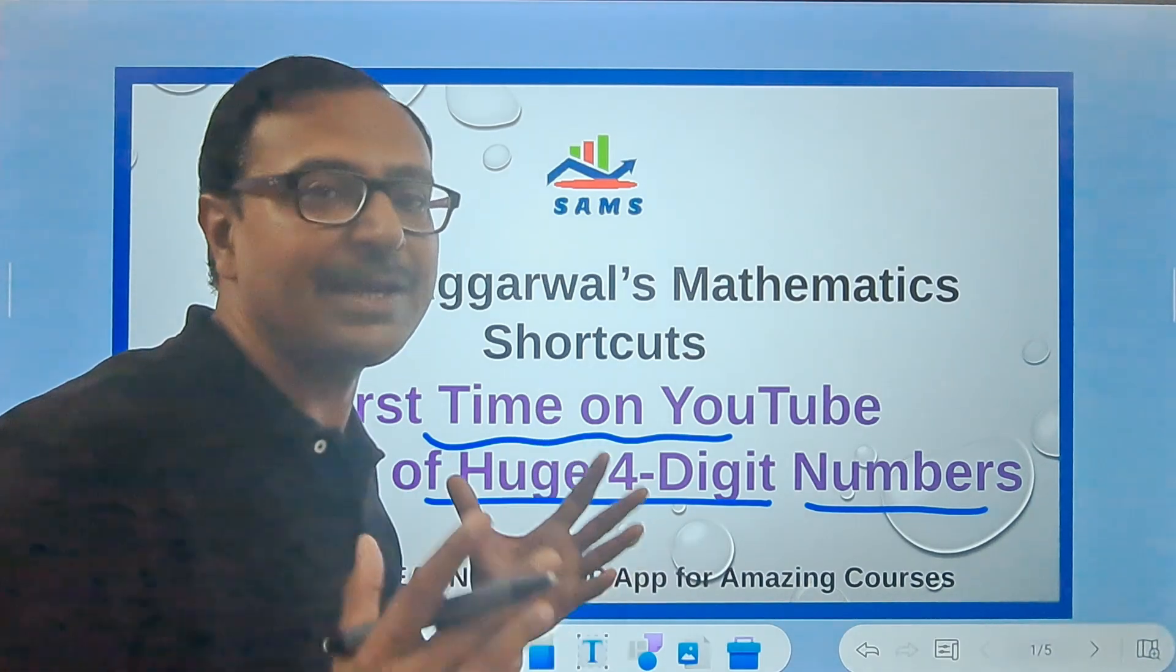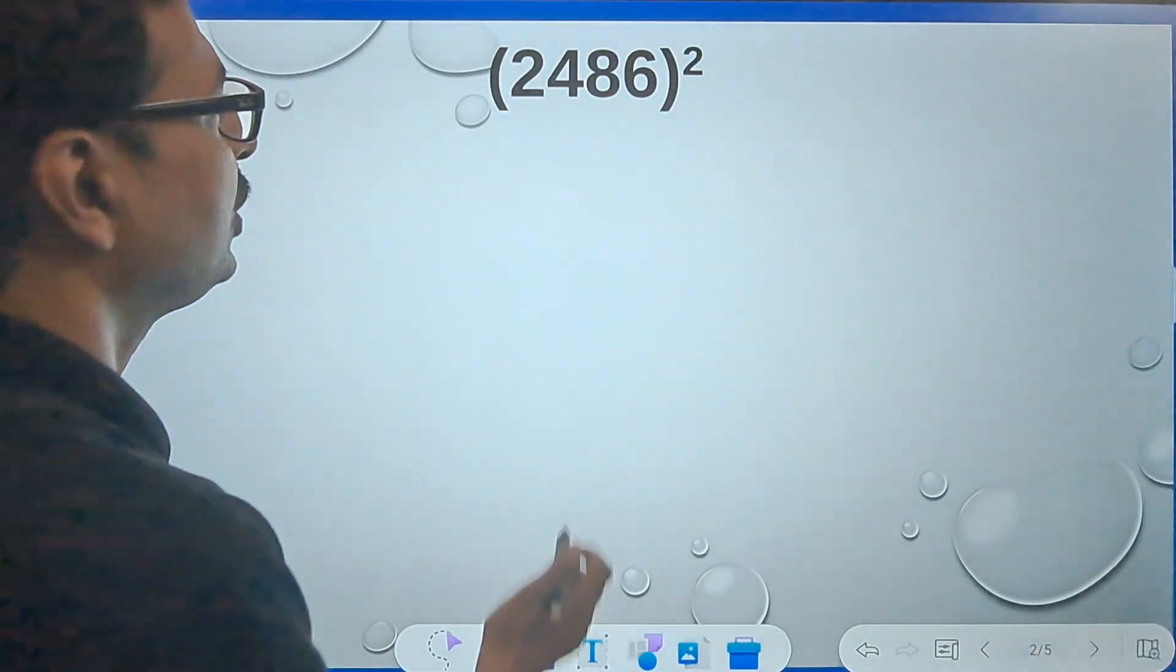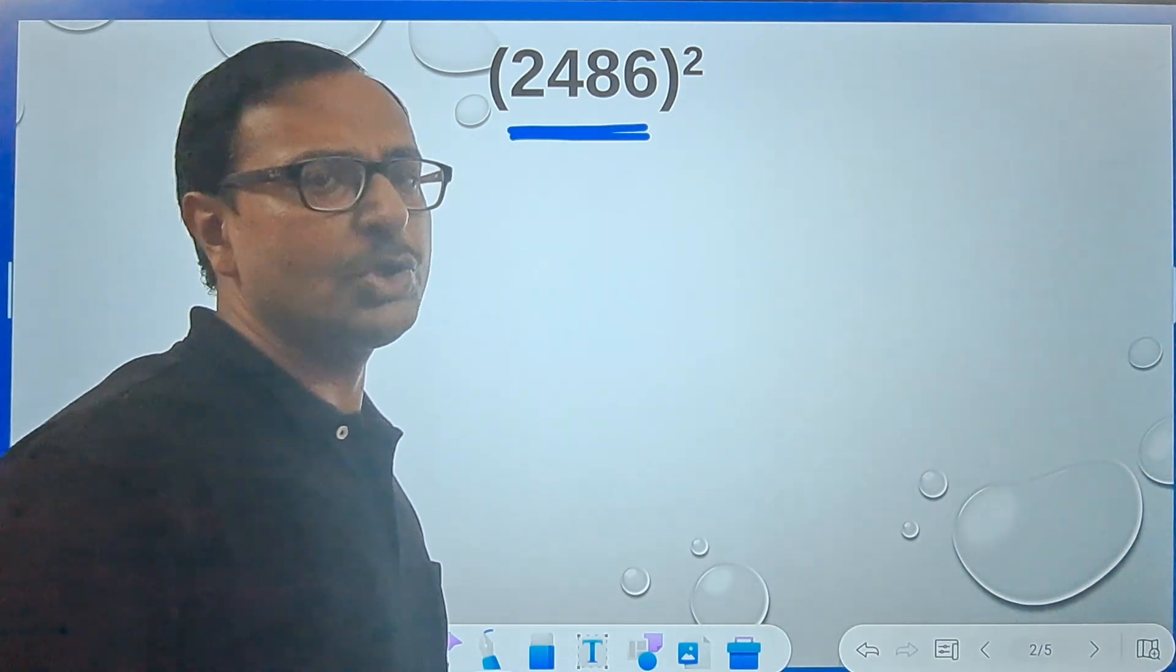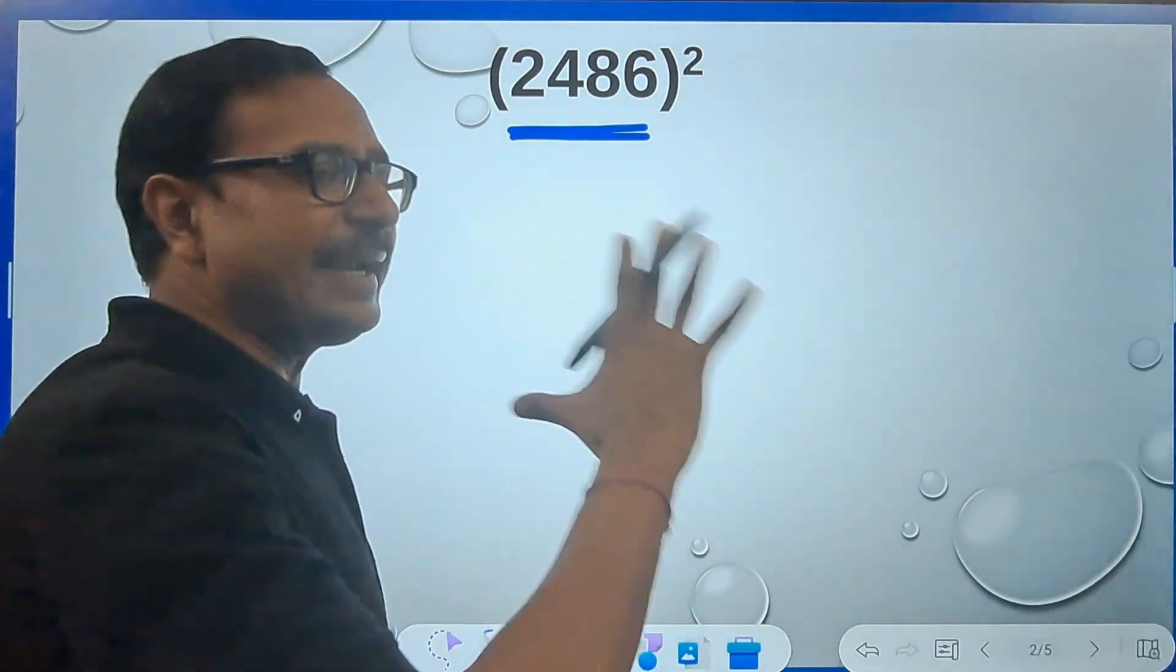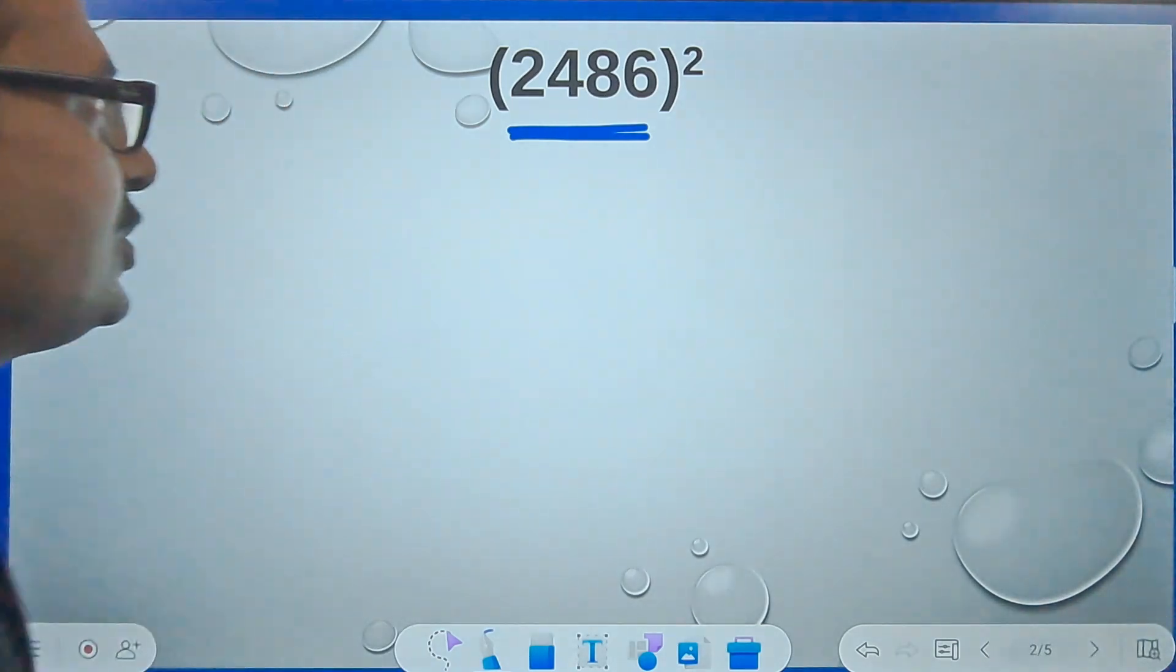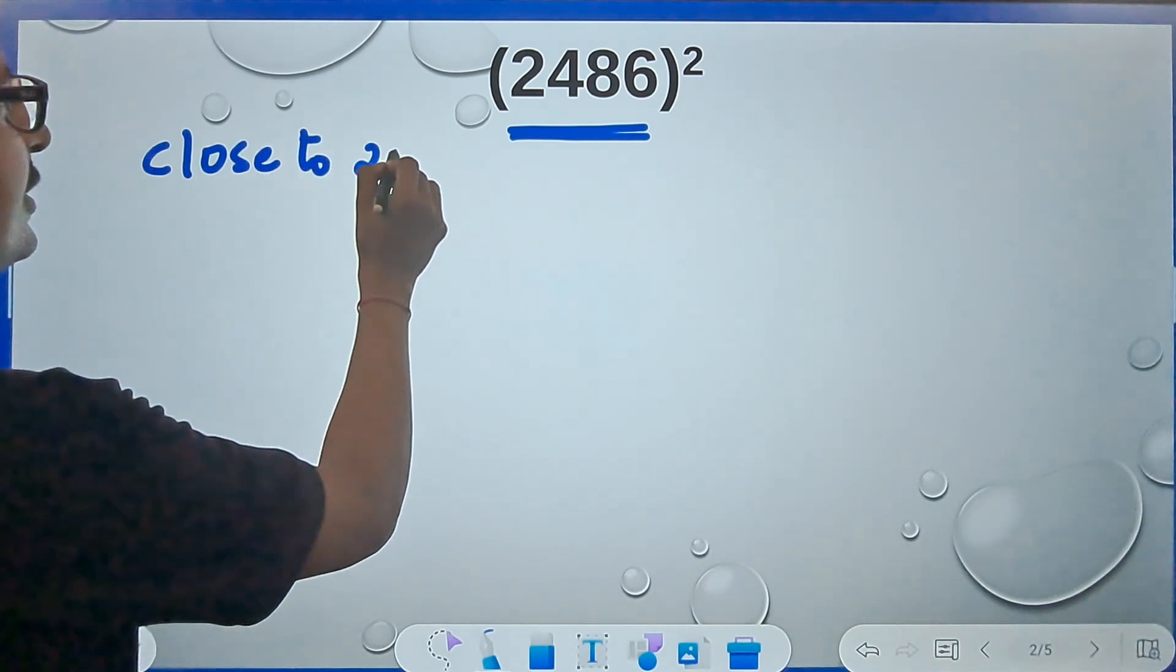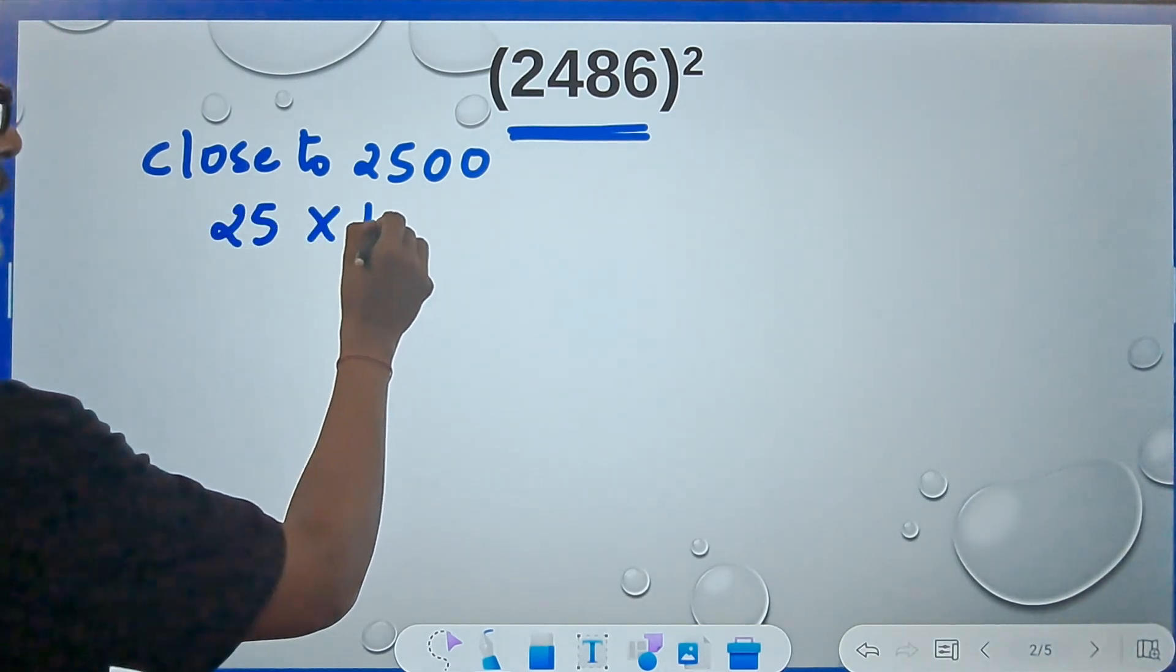Let's see the first question. Here we have the number 2486 square, so 2486 times 2486. It's a huge multiplication. Let's get away from traditional approach and solve it in a different manner. This number is very close to 2500 and 2500 is 25 into 100.